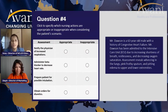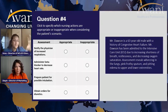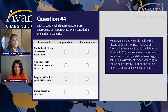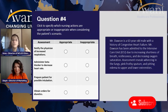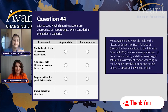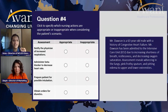This is a matrix option. It's kind of like 'select all,' but it has a matrix-like two options — a list of actions, what is appropriate and what is inappropriate. For each action, you can only choose one; you cannot choose both appropriate and inappropriate. So that's the matrix style question. The question is asking you to click to specify which nursing actions are appropriate or inappropriate when considering this patient scenario.